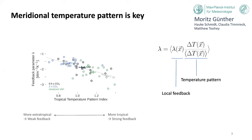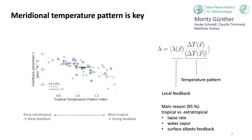All the volcanic aerosol forcing simulations cluster in the strong feedback, tropical temperature change part of the plot, while the 2×CO2 simulations cluster in the weak feedback, extra-tropical part of the plot. The pattern index separates really well the strong from the weak feedback. The lapse rate feedback — partially offset by water vapor feedback — and the surface albedo feedback account for 85% of our feedback differences. On the centennial timescale, the fit line is almost perfectly parallel to the first-decade fit line but shifted by 0.7 W/m²/K.